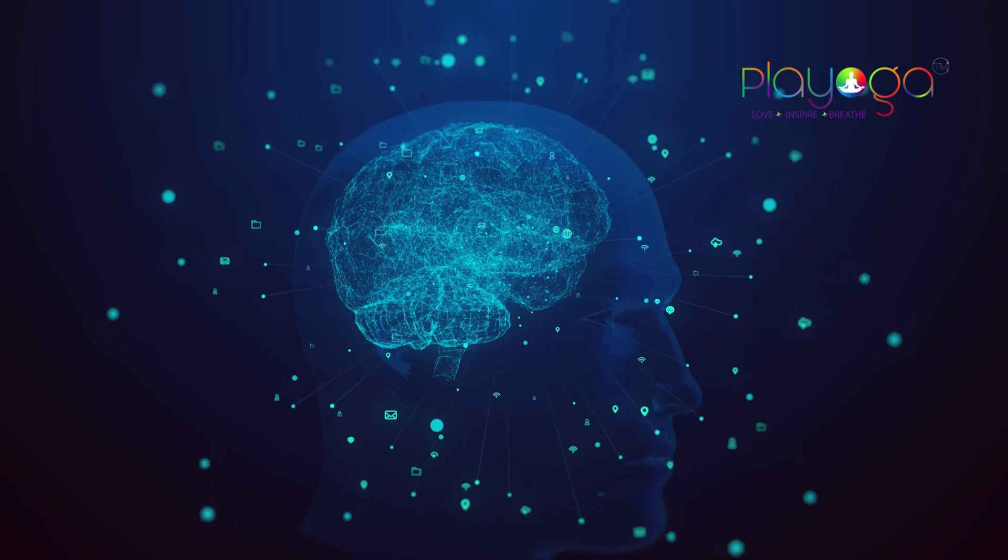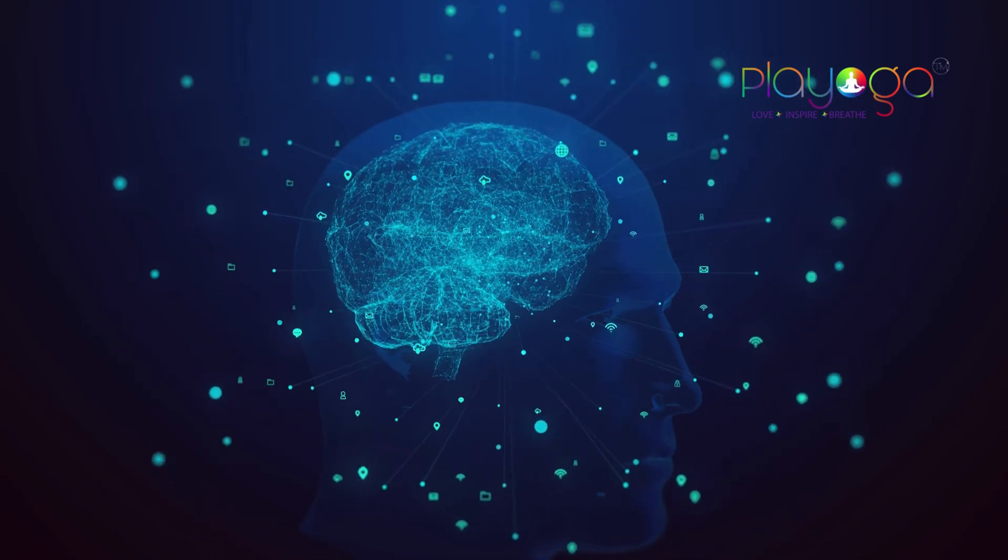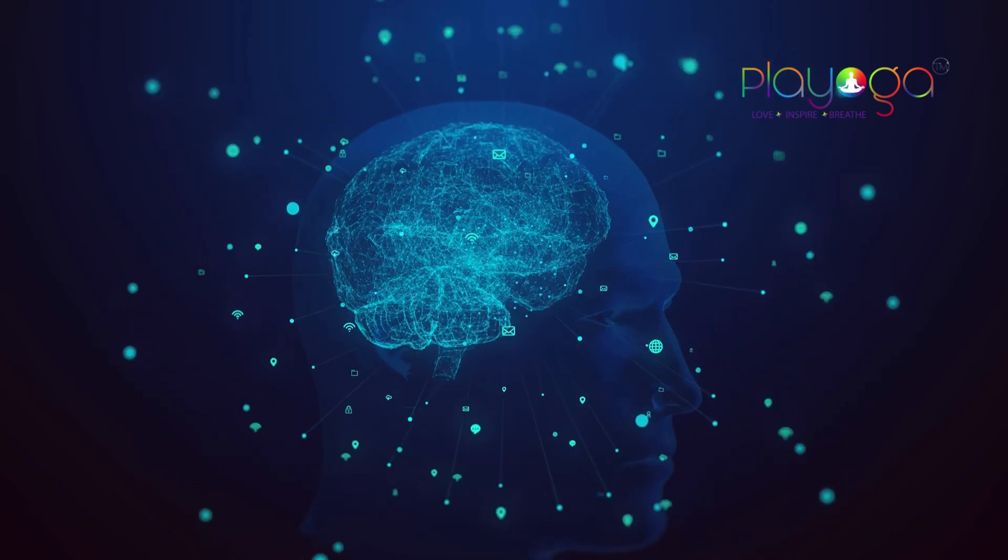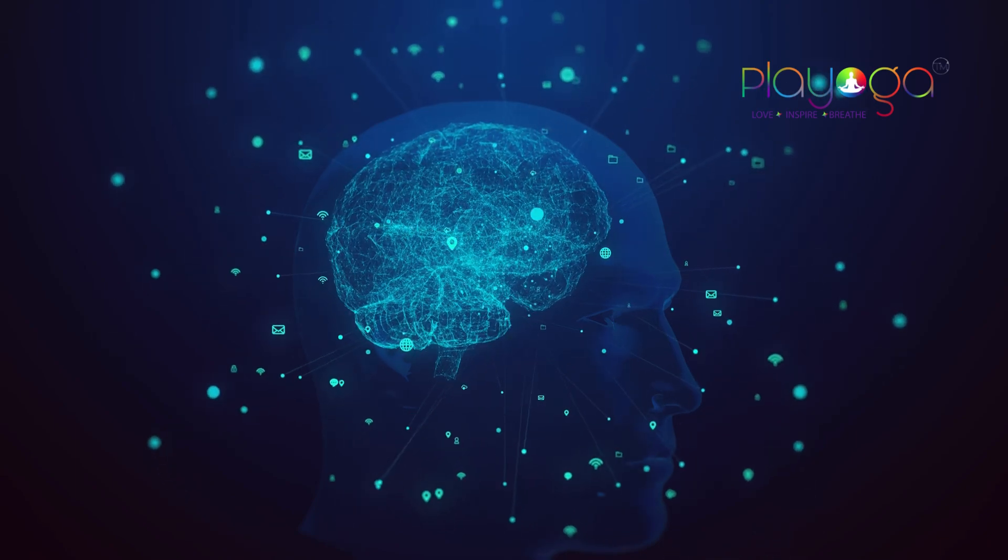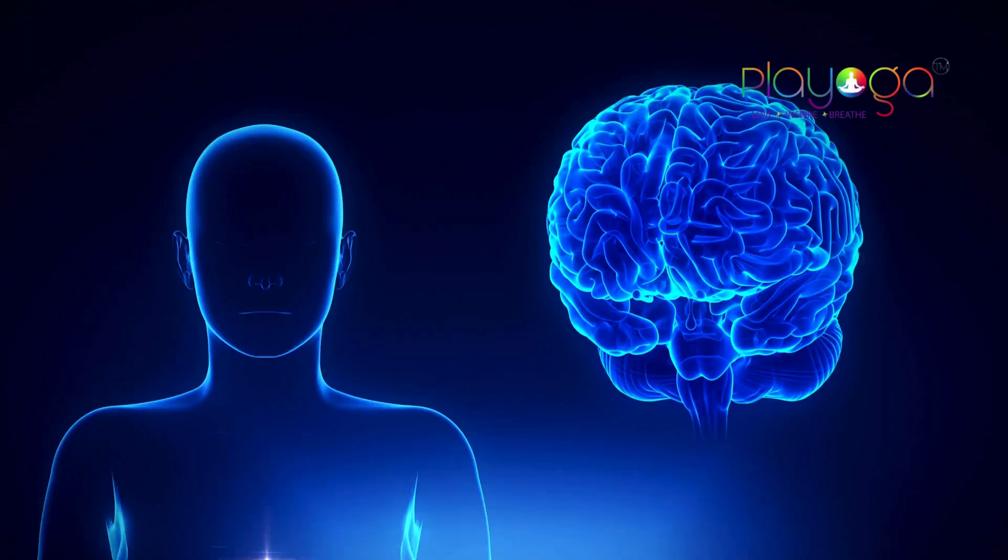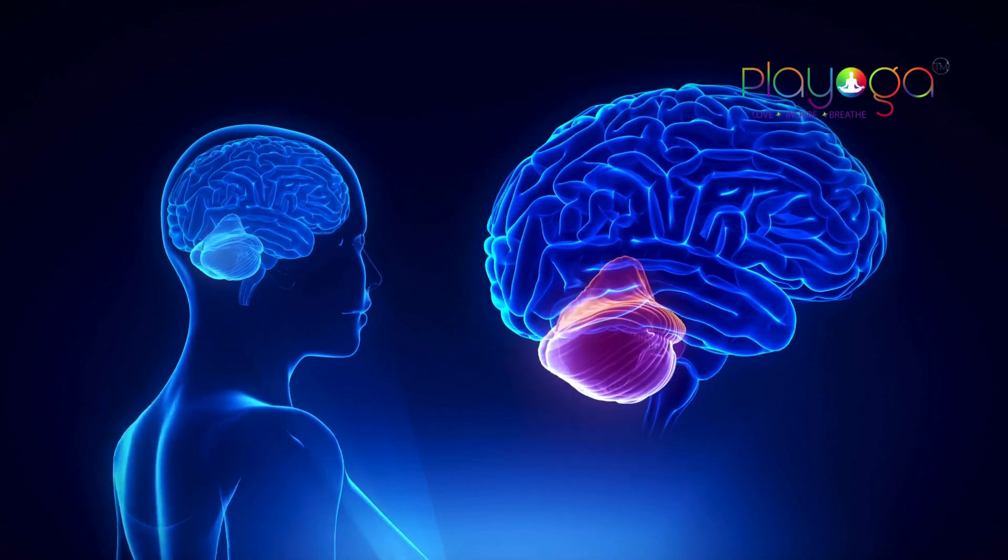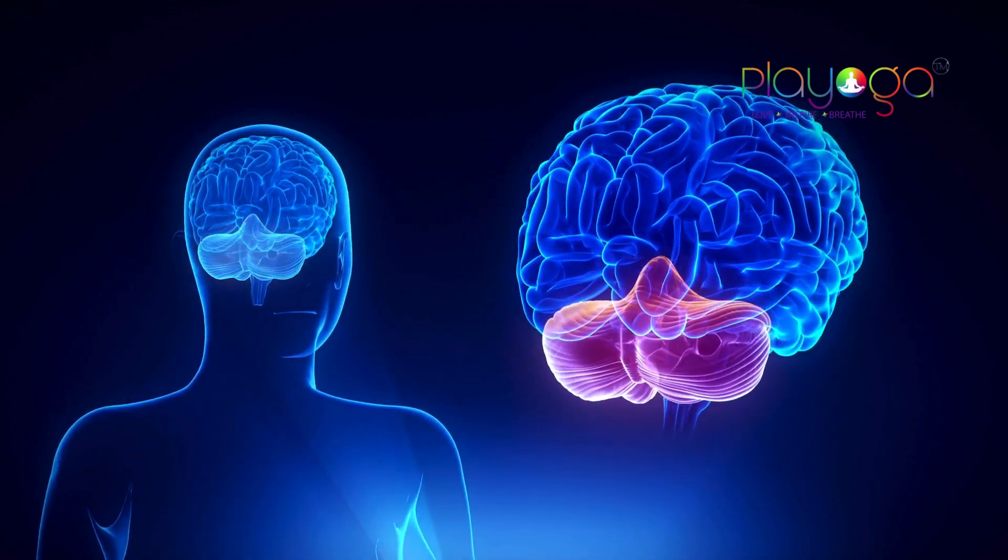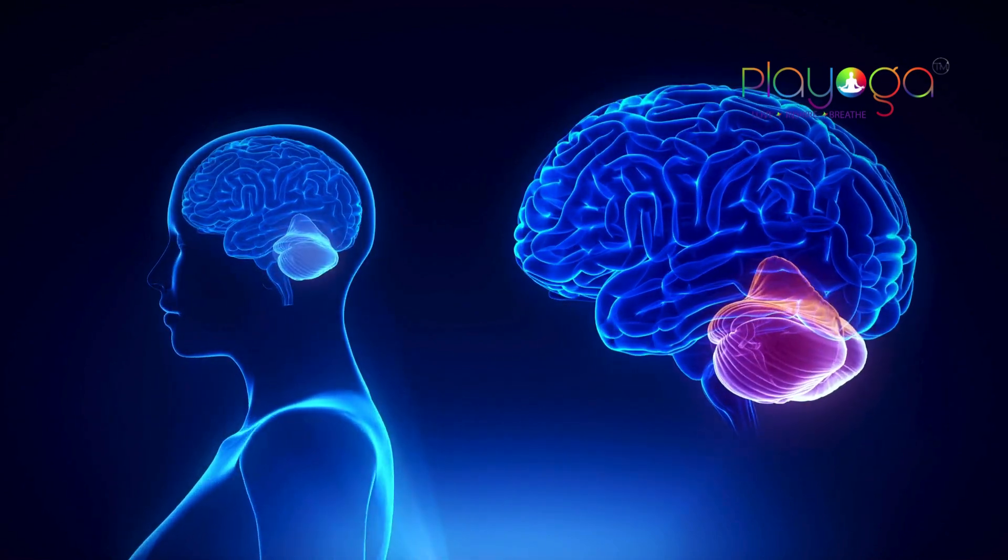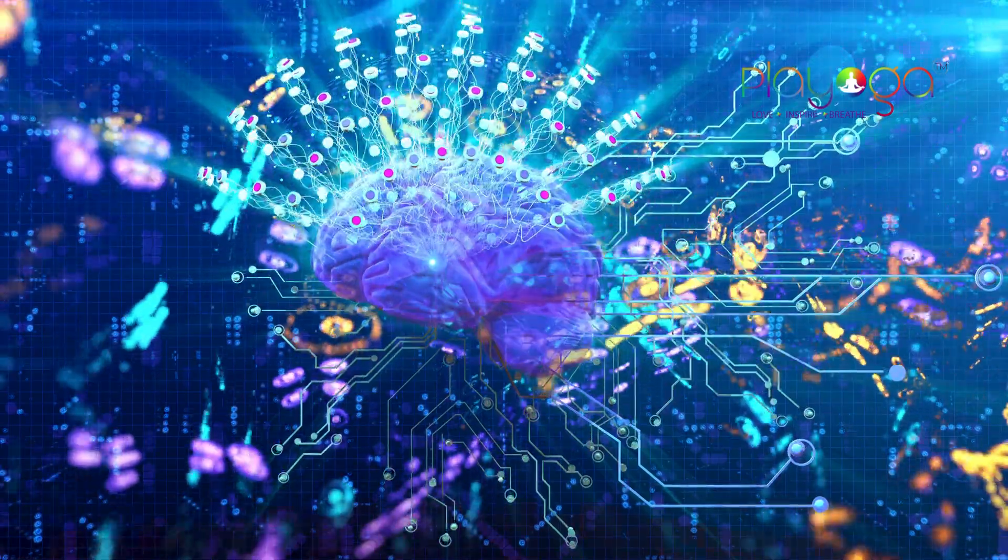Chitta involves four distinct functions. It includes Buddhi, the Ego sense, Mind and the Residuum Self which is the Seat of Memory. The Seat of Memory is Chitta. These include Vikalpa (Verbal Delusion), Nidra (Sleep) and Smriti (Memory).